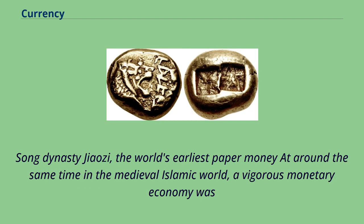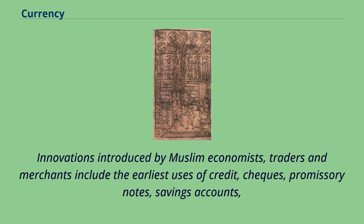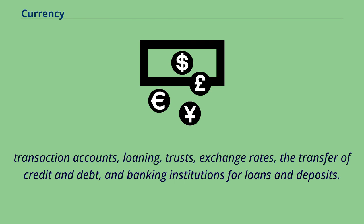At around the same time in the medieval Islamic world, a vigorous monetary economy was created during the 7th–12th centuries on the basis of the expanding levels of circulation of a stable high-value currency. Innovations introduced by Muslim economists, traders, and merchants include the earliest uses of credit, checks, promissory notes, savings accounts, transaction accounts, loaning, trusts, exchange rates, the transfer of credit and debt, and banking institutions for loans and deposits.